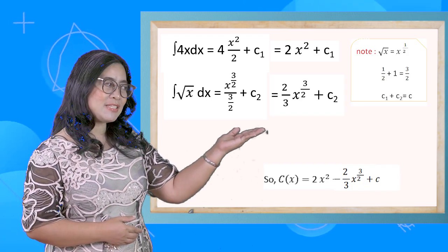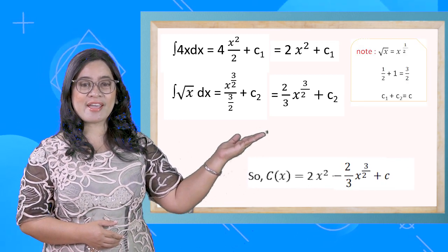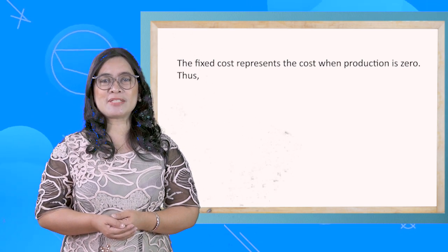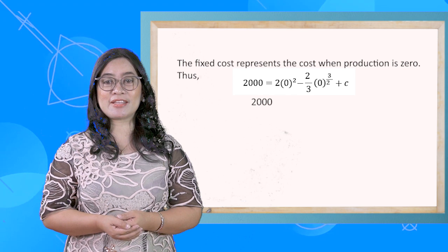So, C(x) = 2x² - (2/3)x^(3/2) + C. The fixed cost represents the cost when production is zero. Thus, 2,000 = C.